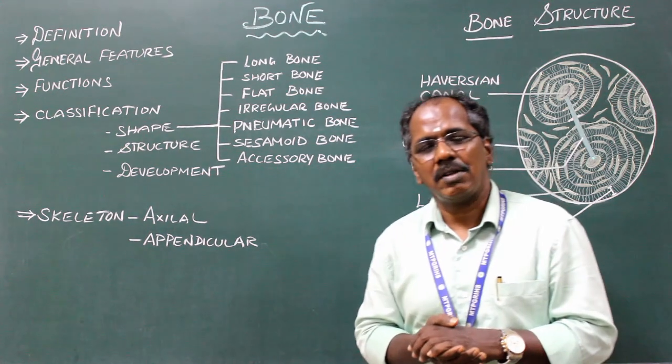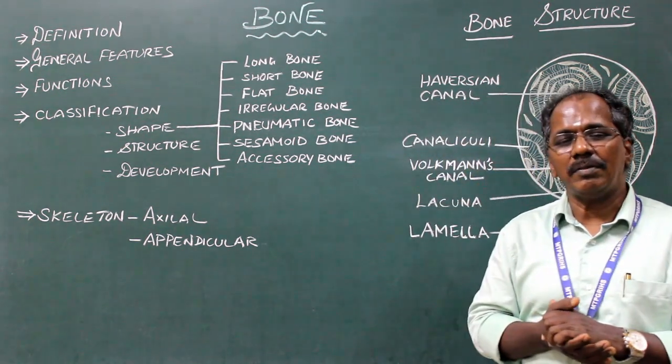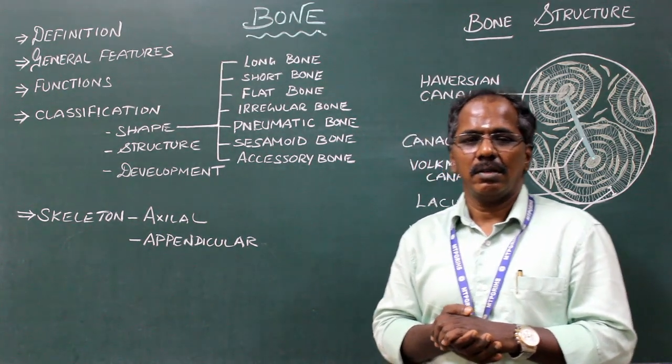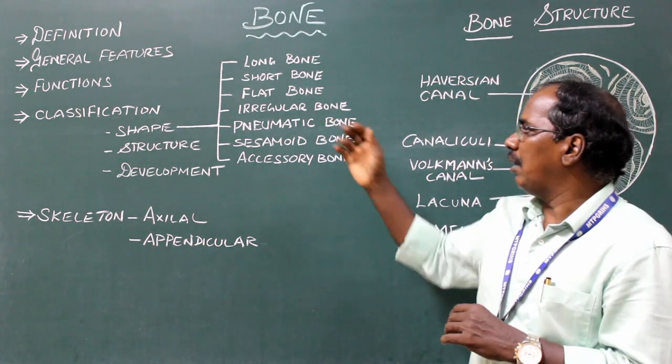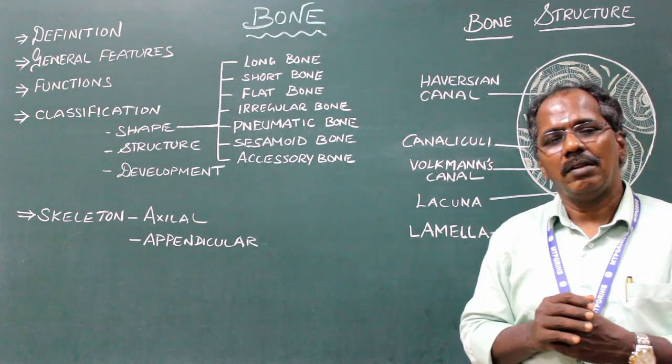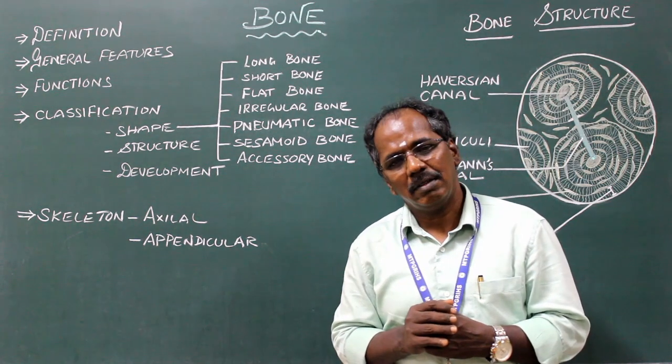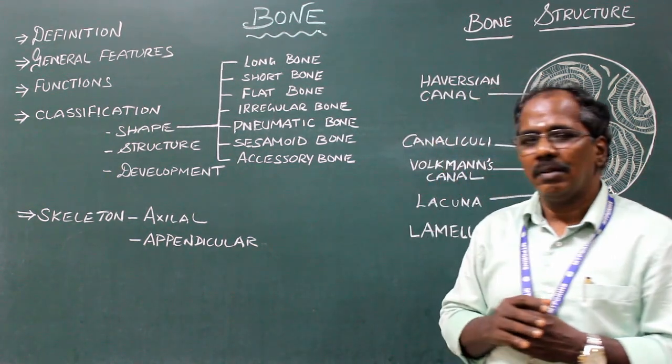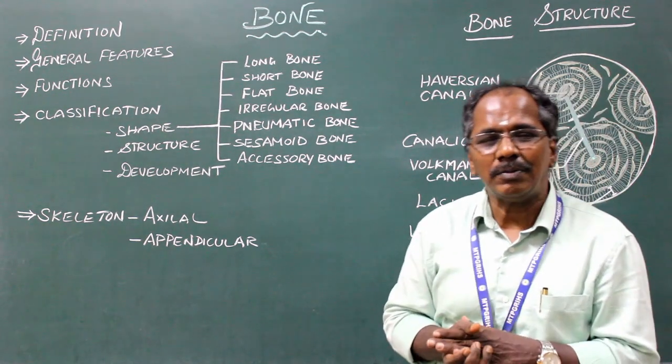Flat bones are present in the skull. Examples: frontal, parietal, occipital bones. Irregular bones, for example: vertebra, some of the skull bones, temporal bone, sphenoid, innominate bone or hip bone.